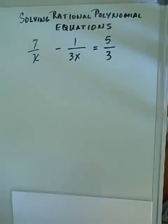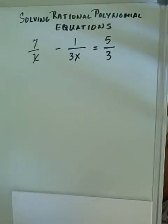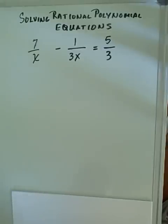Notice this is an equation. When we were working with expressions, we had to get a common denominator before putting terms together. But since it's an equation, we can do something a little different which will make our life easier — we can multiply all three terms by the common denominator.